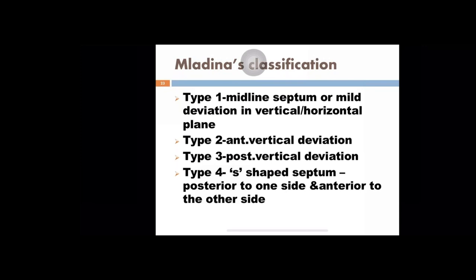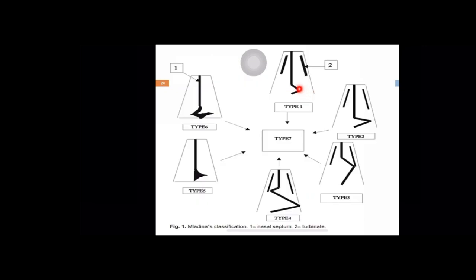Mladina's classification: Type 1 is midline septum or mild deviation in vertical or horizontal plane. Type 2 is anterior vertical deviation. Type 3 is posterior vertical deviation. Type 4 is an S-shaped septum — posteriorly deviated to one side and anteriorly to the other. Type 5 is a sharp horizontal spur on one side. Type 6 is a sharp spur on one side with a grooving on the other side. Type 7 is a combination of all these varieties.